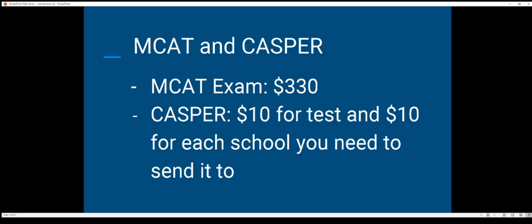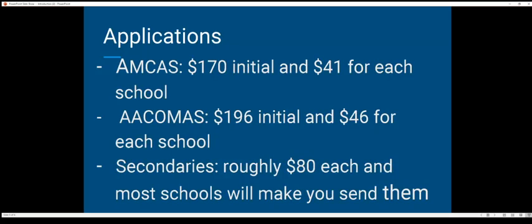Now for applications: AMCAS — for MD schools — is $170 initial plus $41 for each additional school. AACOMAS — for DO schools — is $196 initial plus $46 for each school. So every time you add a school, it's $41 or $46 more dollars.